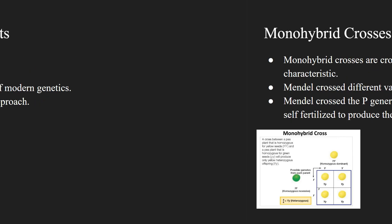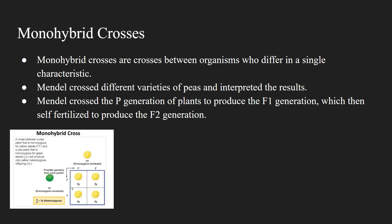Now let's discuss monohybrid crosses. Mendel crossed organisms who differed in a single characteristic, and he crossed these different varieties of peas and interpreted the results using math. He crossed the P generation, which means parent, which led to the first filial, or F1 generation, which then self-fertilized to produce the F2, or second filial generation.